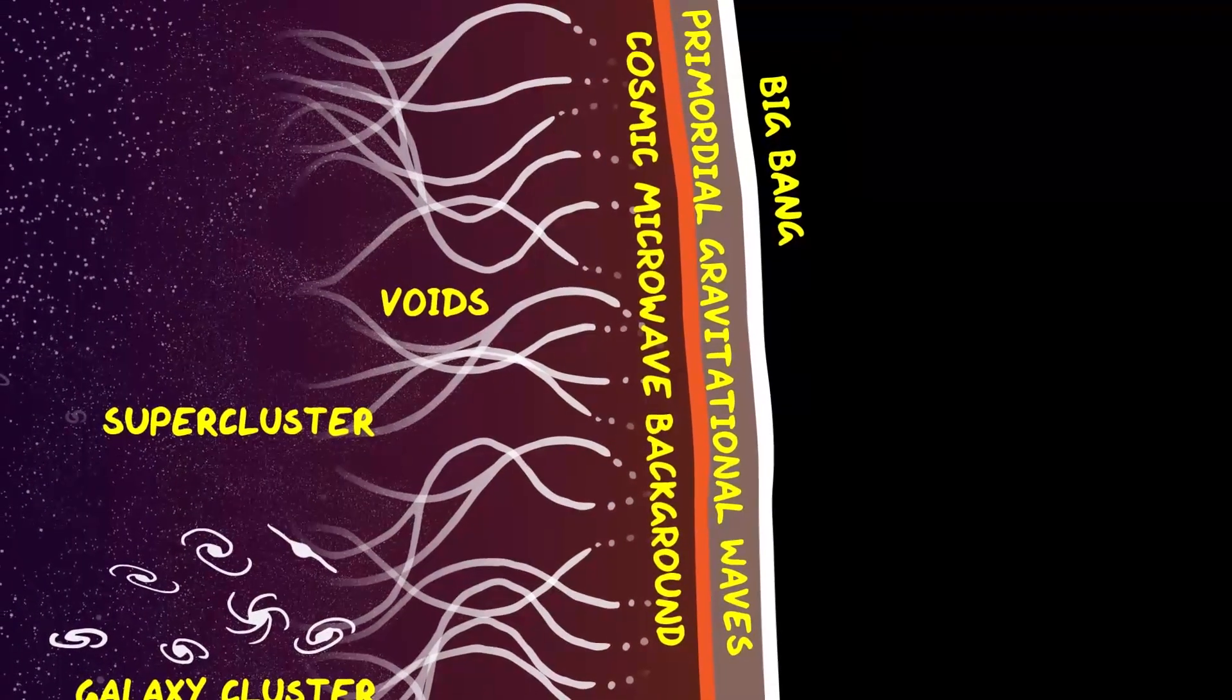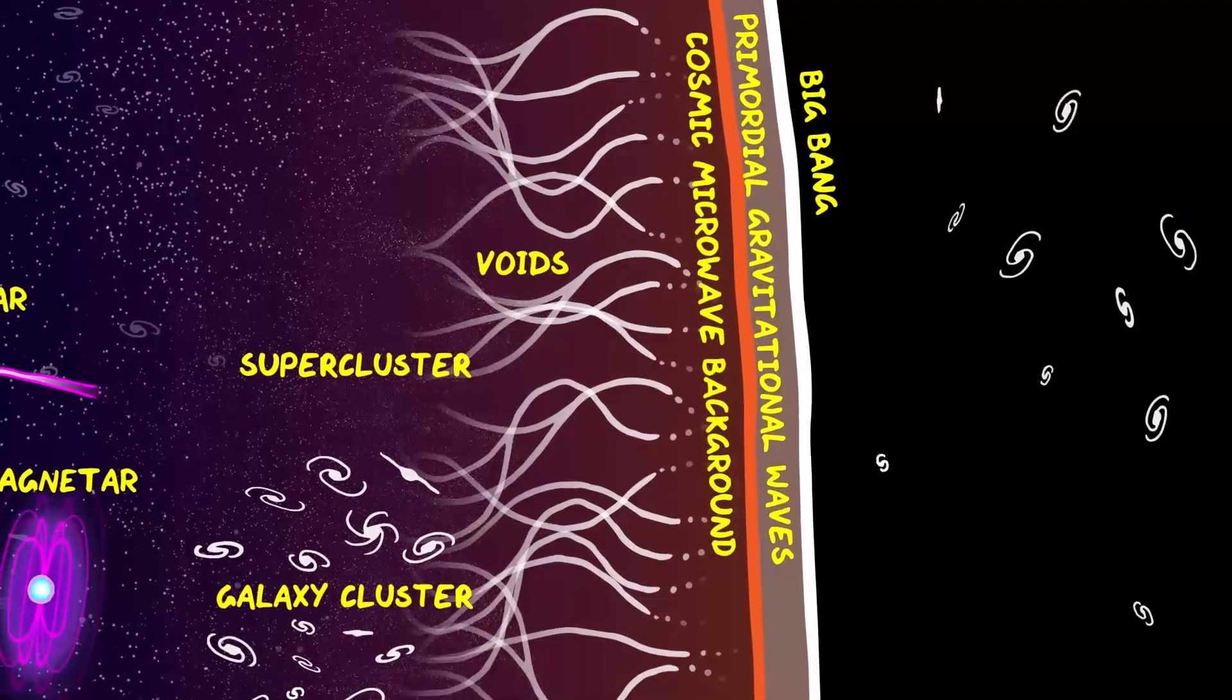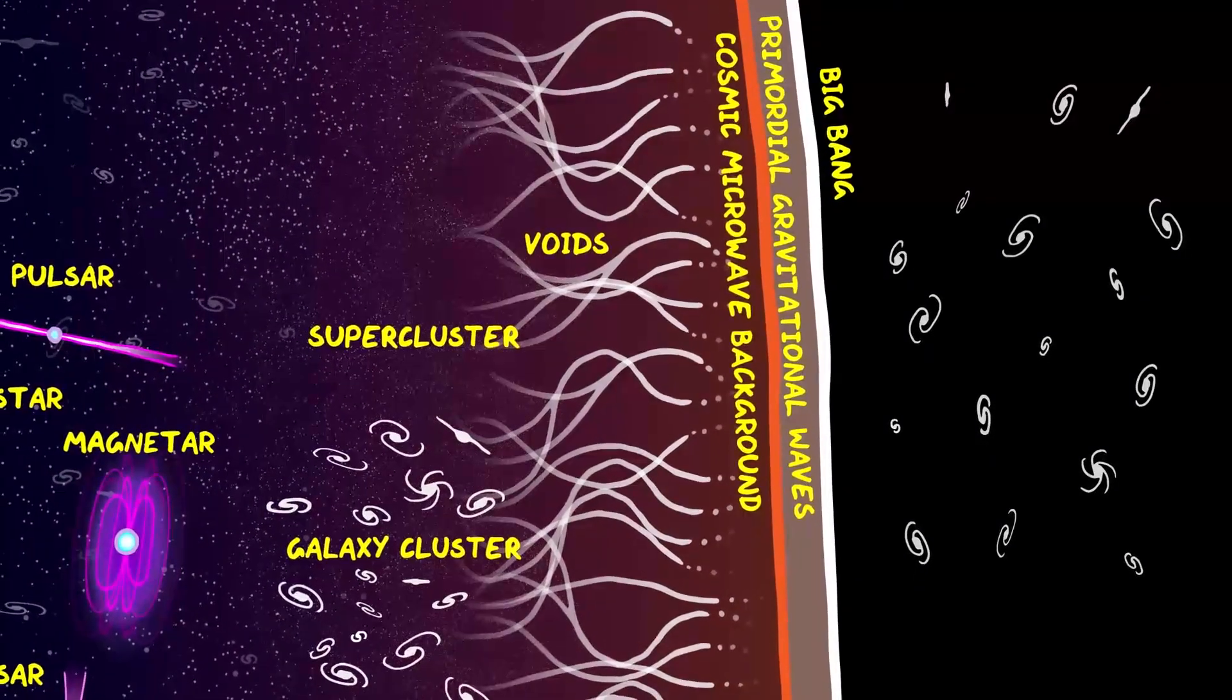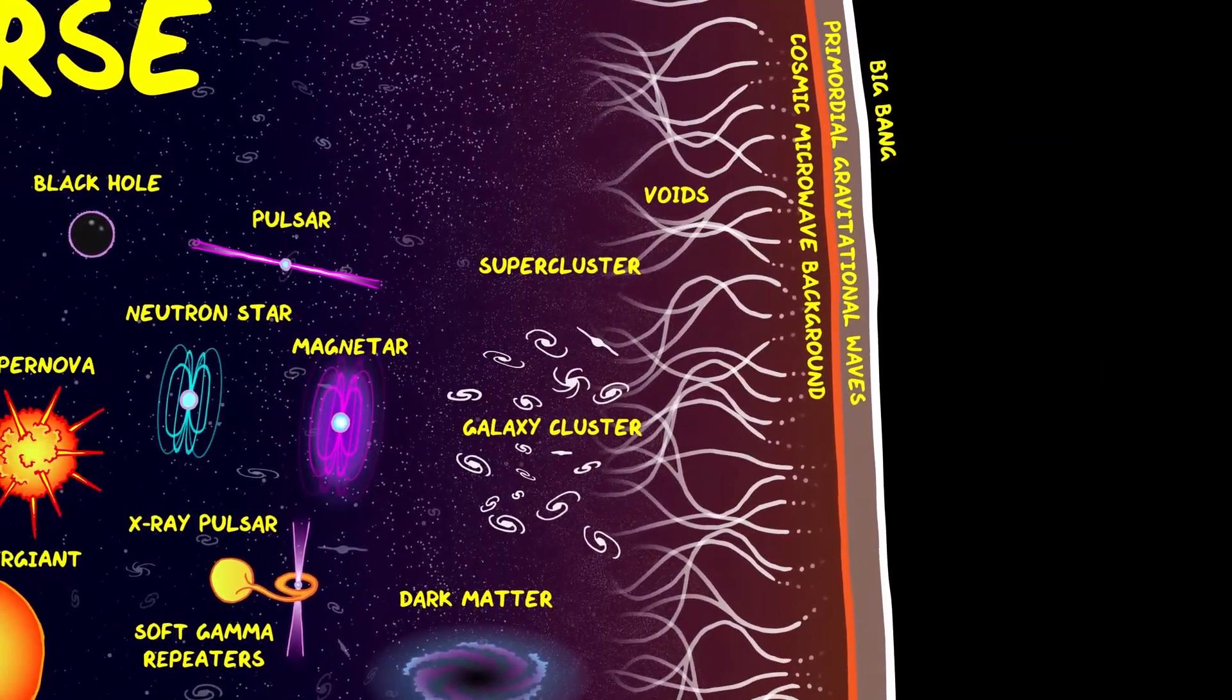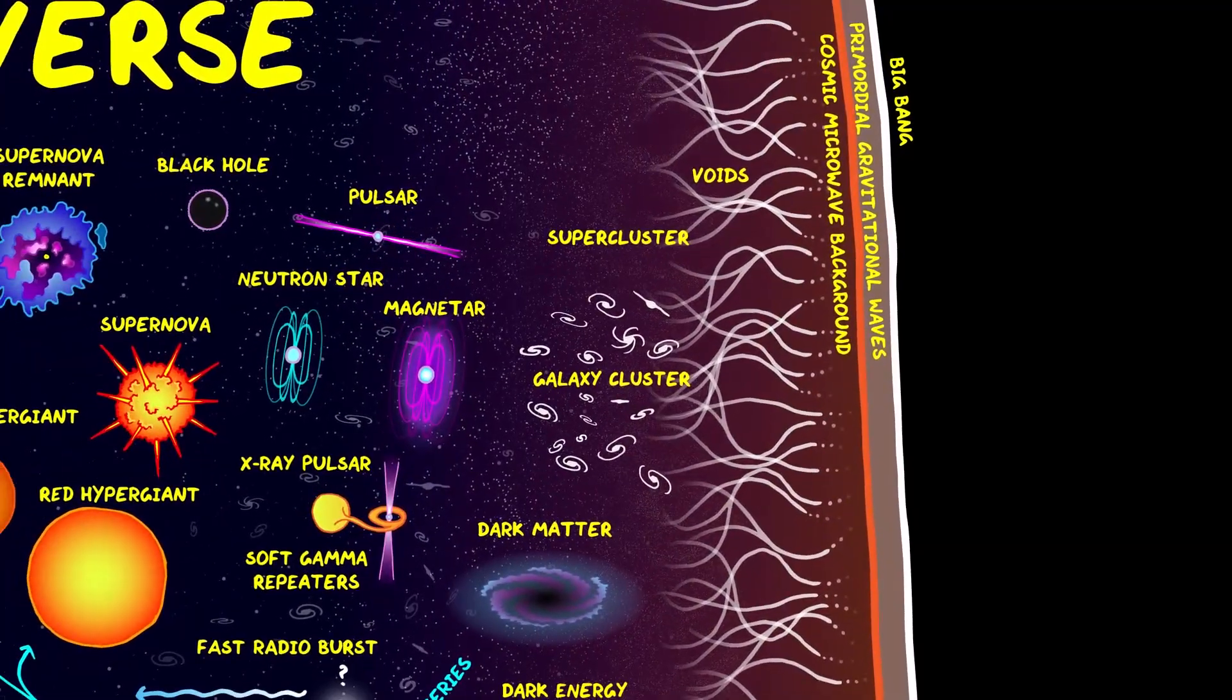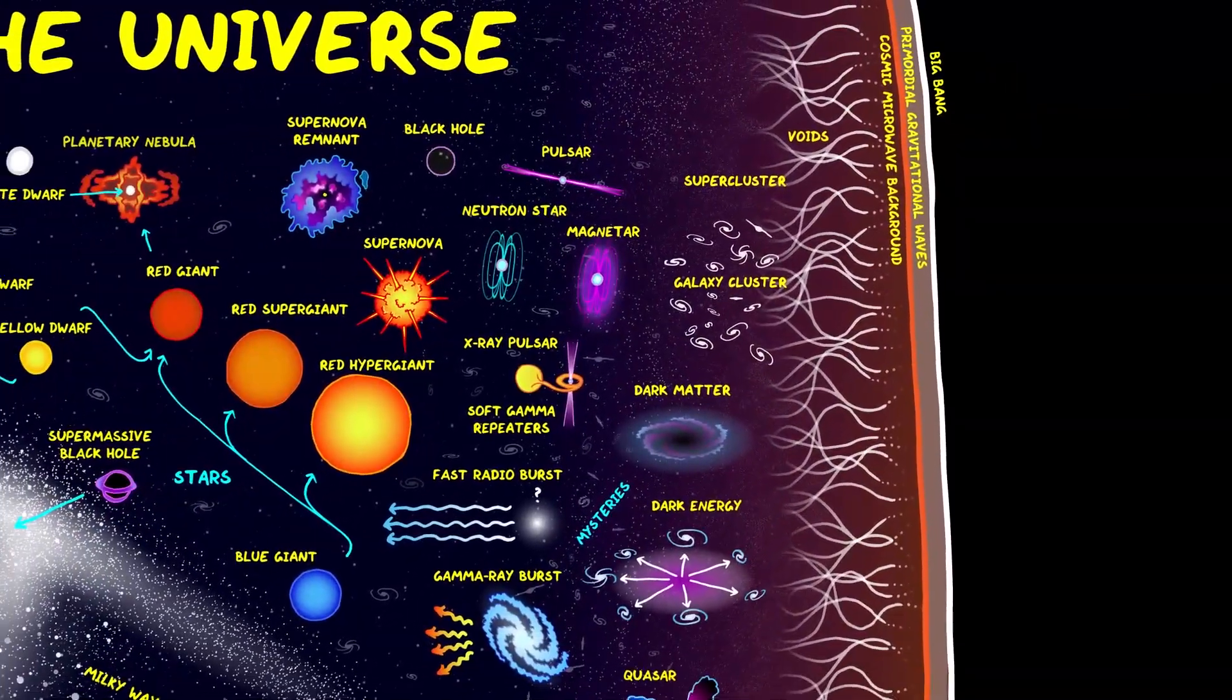This makes it the edge of the observable universe at 46 billion light years away. We know that there's still stuff further away from us than that, but we'll never see it because it's traveling away from us faster than the speed of light. And I said at the beginning the universe is infinite, but we don't actually know whether the universe is infinite or finite. That's another mystery to be solved.